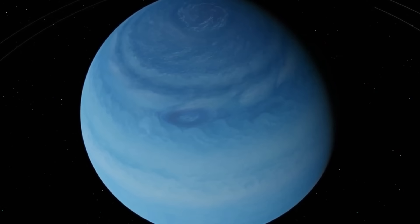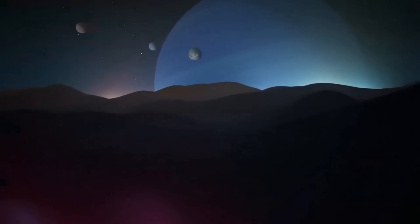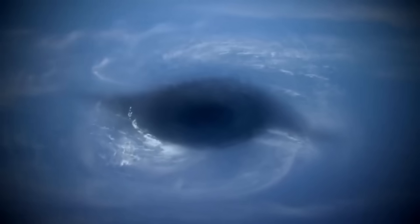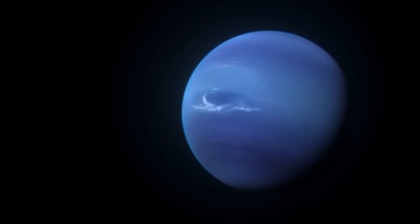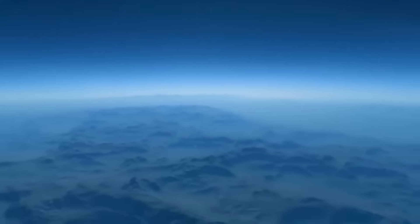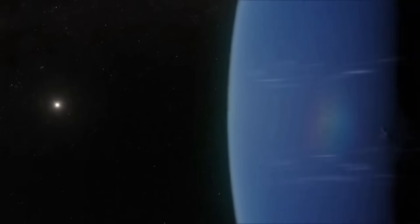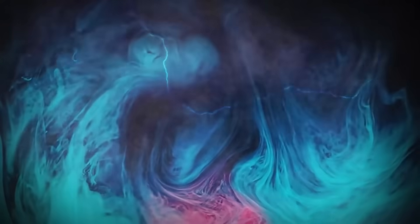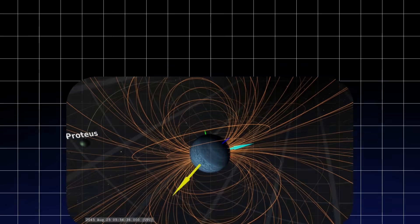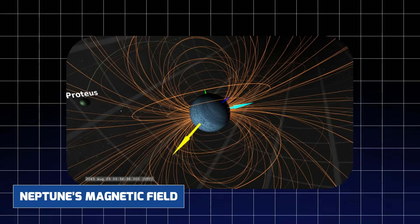These warmer regions shouldn't exist under traditional models. Solar energy is far too weak at Neptune's distance to account for them, and there is no evident tidal heating from nearby moons of significant mass. Something internal is generating more heat than expected.